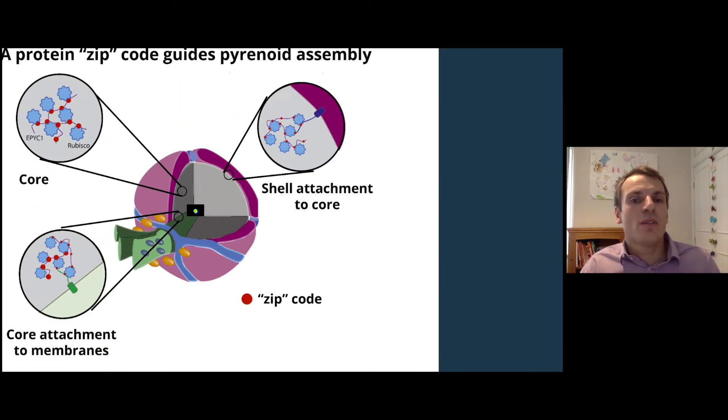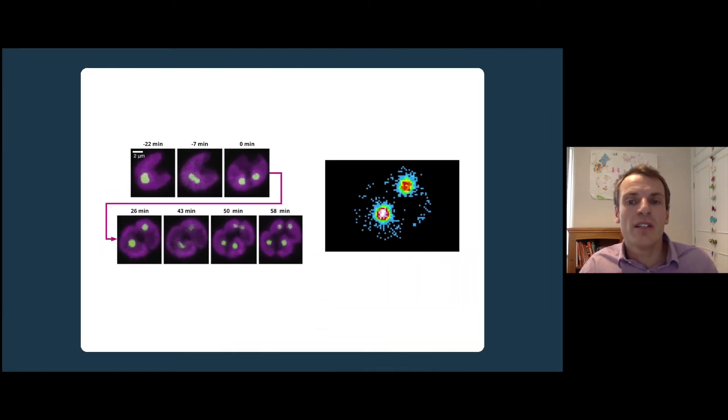Next, we wondered what happens to the pyrenoid when a cell divides. Here we can see a cell dividing twice, starting from a single mother cell and resulting in four daughter cells.